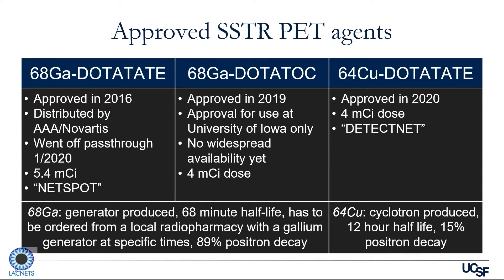The third agent most recently approved is copper-64-DOTATATE, a slightly different agent because it's radiolabeled with copper rather than gallium. It was approved in 2020 and is actually one of the most widely used imaging agents on the market. One reason is that copper is produced in a cyclotron, so you can produce large quantities, and it has a 12-hour half-life allowing you to ship it around the country. In the United States, it's primarily made in St. Louis, Missouri and delivered nationally. Because of that 12-hour half-life, you don't have to worry about the timing of the imaging study, making it much easier to schedule. Gallium-68 is generator produced — you can only make about two doses maximum per synthesis — making it hard to schedule. For this reason, copper has become much more widely used.